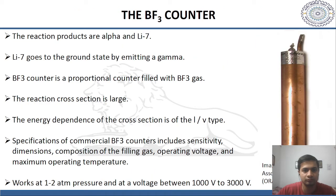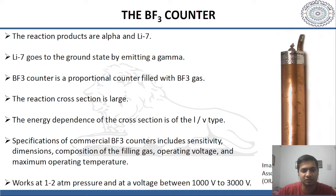If the Q-value is large, it makes detection easy but measurement of the neutron energy becomes difficult. The first detector is the BF3 counter, which is a proportional counter filled with BF3 gas. When the neutron strikes BF3, the reaction products are alpha and lithium-7. About 96% of lithium-7 goes to the ground state by emitting a gamma. The reaction cross-section is large and the energy dependence of the cross-section follows a 1/v relationship. Commercially available counters have specifications including sensitivity, dimensions, filling gas composition, operating voltage, and maximum operating temperature. These counters are generally operated at around 1000 to 3000 volts and at pressures of ½ to 1 atmosphere.